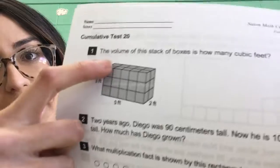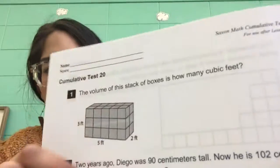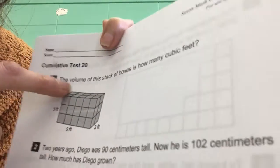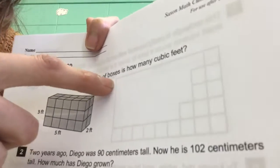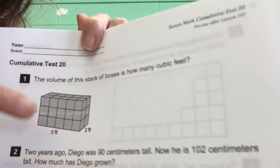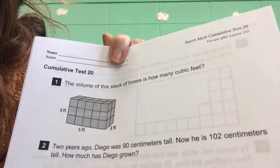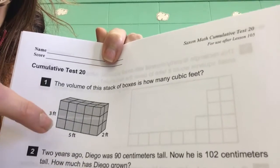Okay, number one. Let me see if I can come on the side a little bit here for you guys. Okay, ready? The volume of this stack of boxes is how many cubic feet? So the volume, we know the volume, you multiply the length times the width times the height.